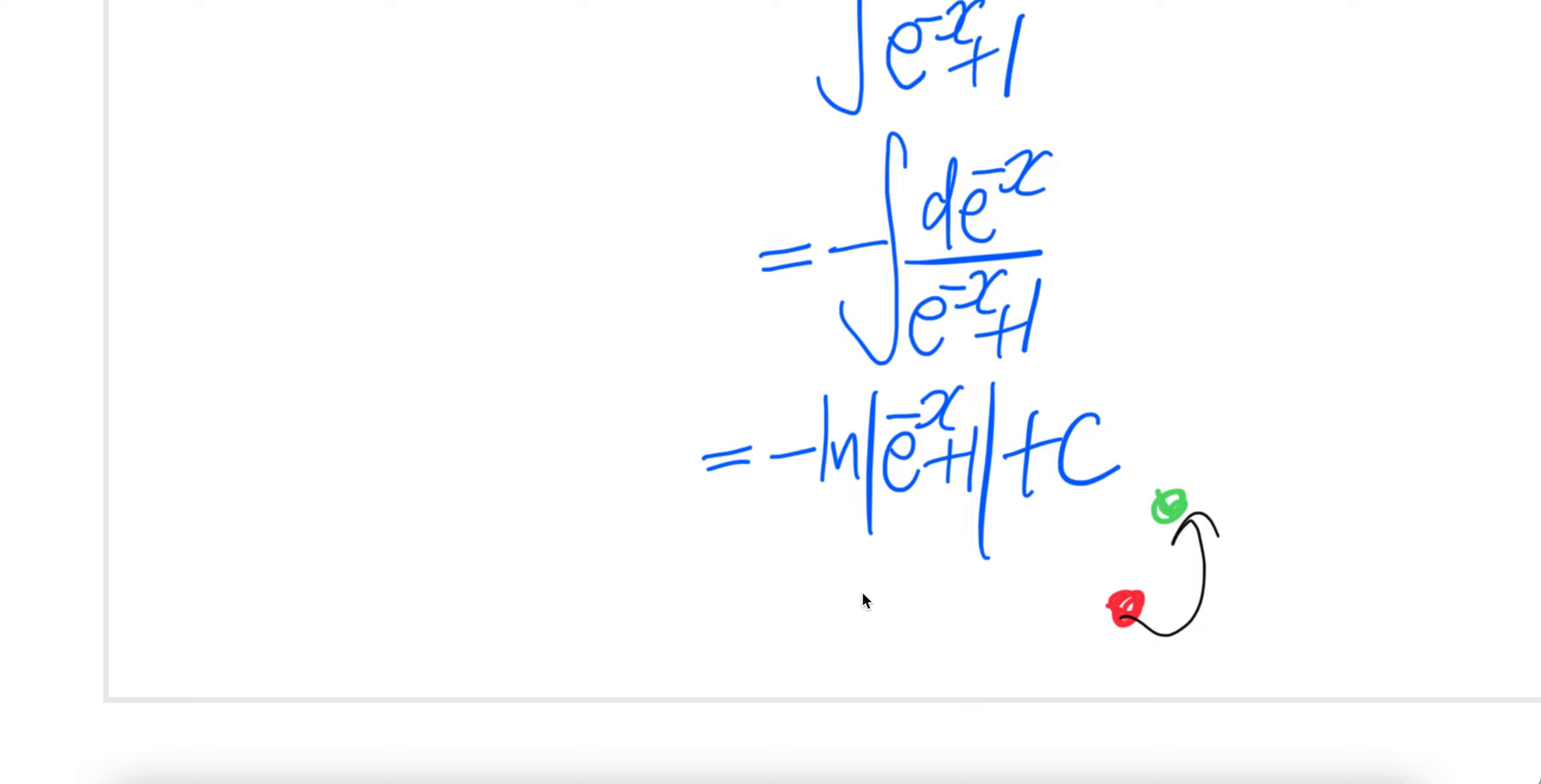So that is log 1 plus e to the power x minus ln e to the power x. That negative one negative cancel. You get ln e to the power x comes down. ln e is 1. 1 times x is x minus ln 1 plus e to the power x.